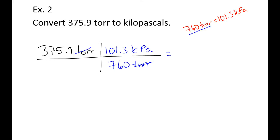Now, when we do this, we're going to be doing one of those multiplications, where we're going to multiply across the top. So, 375.9 times 101.3 gives us 38078.67 divided by 760, and that equals 50.10 kPa.